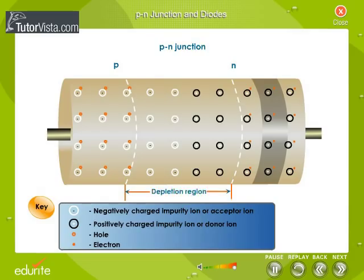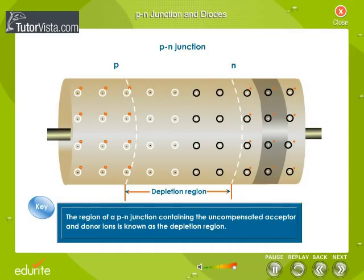And this region forms the depletion region. The region of a P-N junction containing the uncompensated acceptor and donor ions is known as the depletion region. This region is named so because it is depleted of mobile charge carriers.